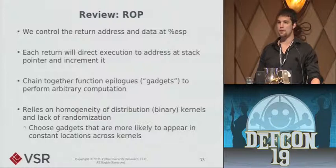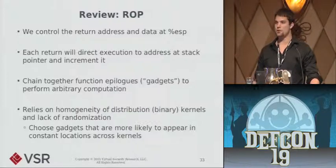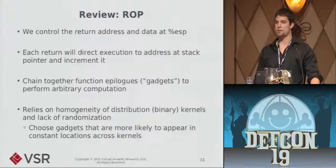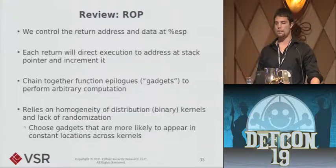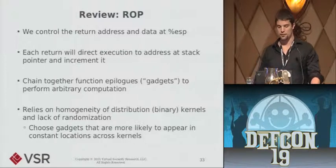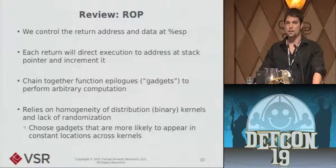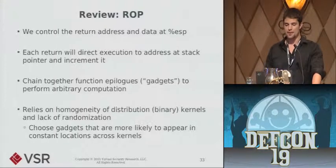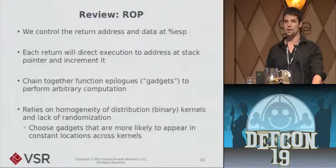I say 'at known locations' because this relies on knowing where stuff is in memory — a fairly reasonable assumption in the kernel world. If you're running a distribution kernel like Ubuntu, Debian, or Fedora, they're shipping binary kernels, which means everyone with the latest version of Ubuntu has the same kernel image in memory in terms of the code. So it's fairly reasonable to assume that if you know something about your target, you essentially know where in memory certain instructions live and there's no randomization of the kernel at all. To make this a little bit better, you can choose these gadgets — these little pieces of code you're executing — in such a way that they're more likely to appear across multiple kernel builds.